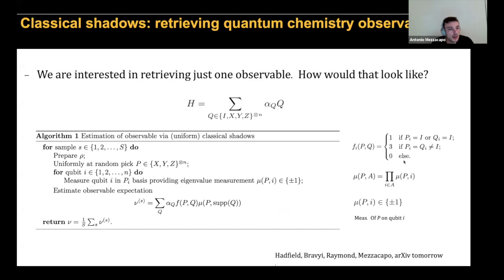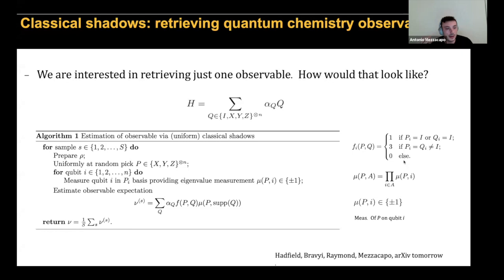How would the classical shadow algorithm look if we just wanted to retrieve one observable? We repeat this protocol for a certain number of samples: prepare our state ρ, pick a random measurement basis distributed over the X, Y, Z directions for each qubit, measure each qubit in that randomly drawn basis, and then use those single-shot measurements to produce a single-shot estimation of the observable we are interested in. One has to use this F-function, which is essentially a measure of how likely it is that your Pauli operator P, uniformly drawn at random, matches one of the Pauli operators of the Hamiltonian.